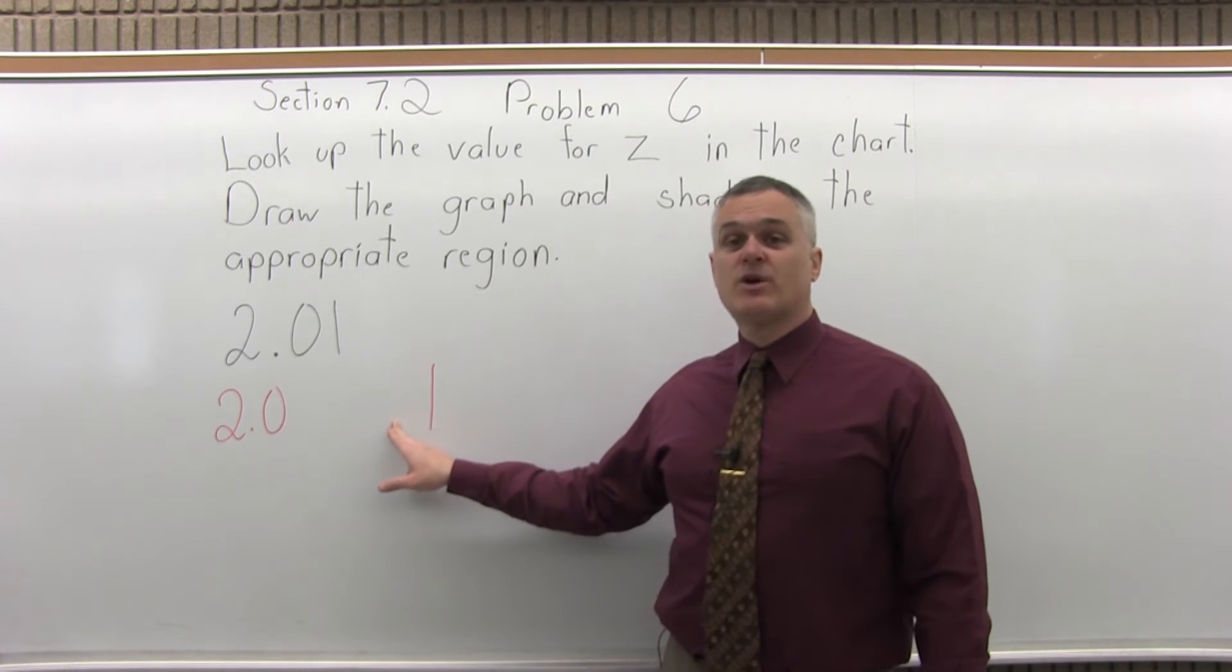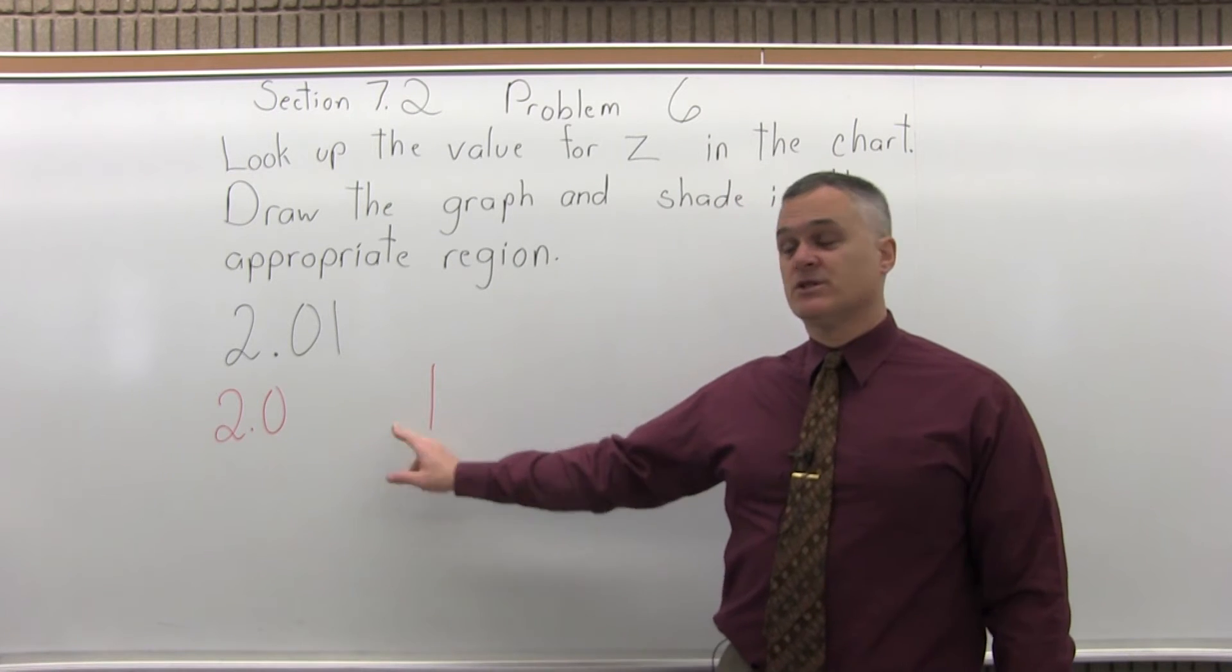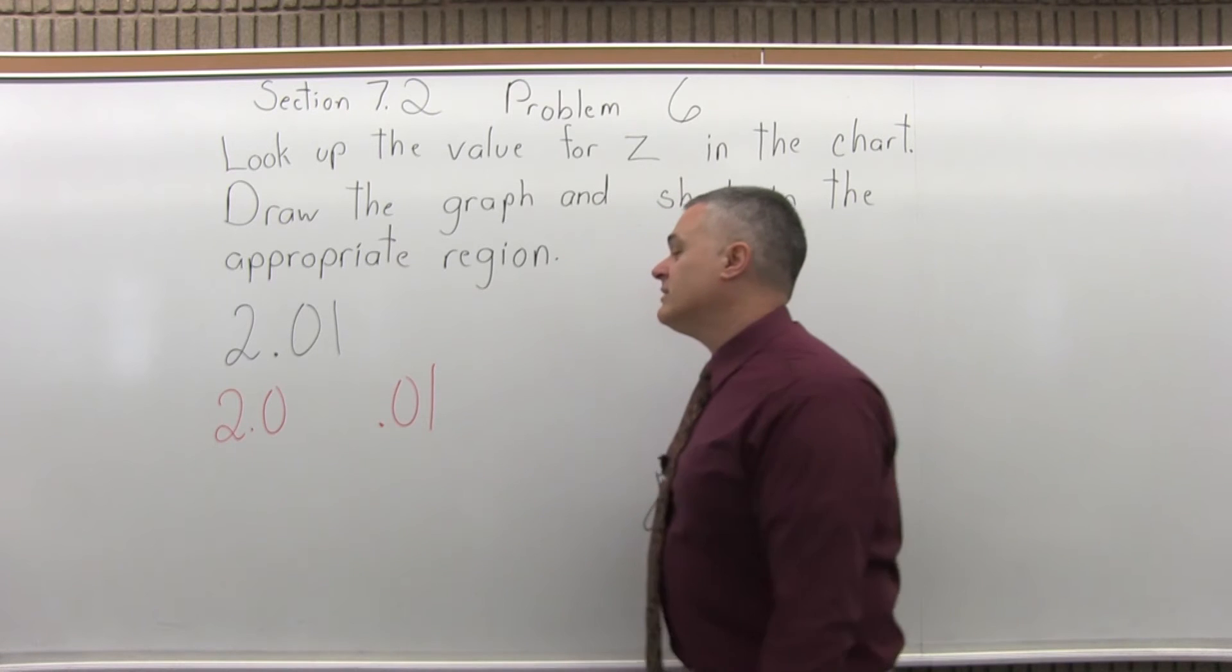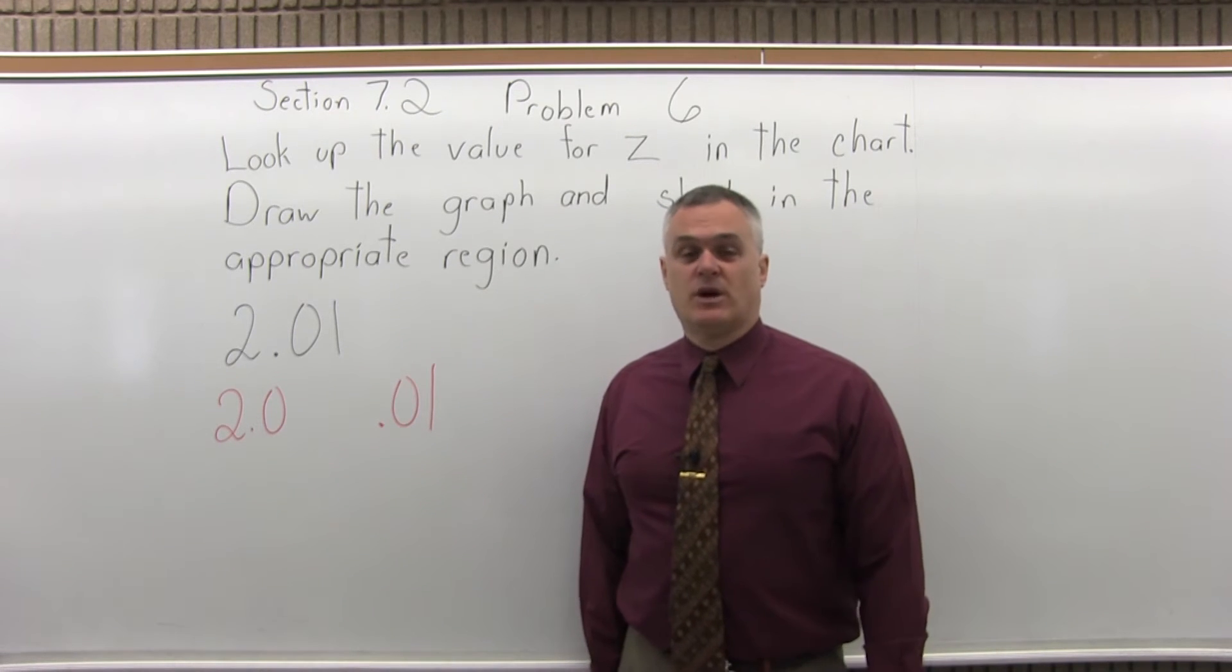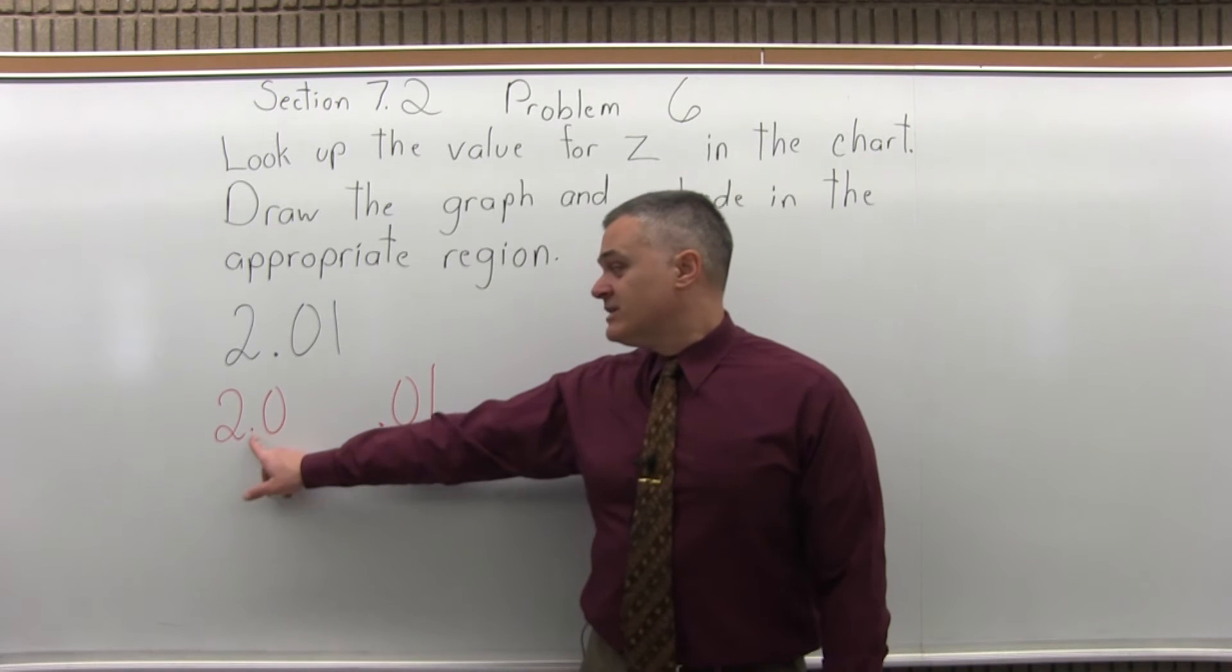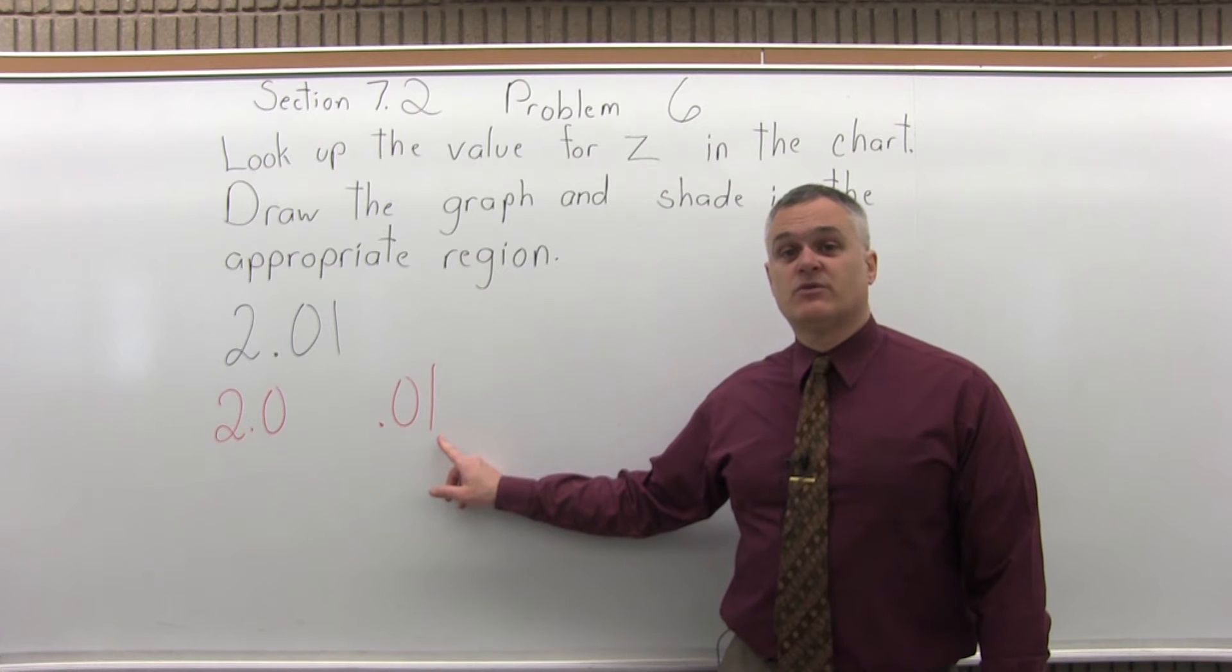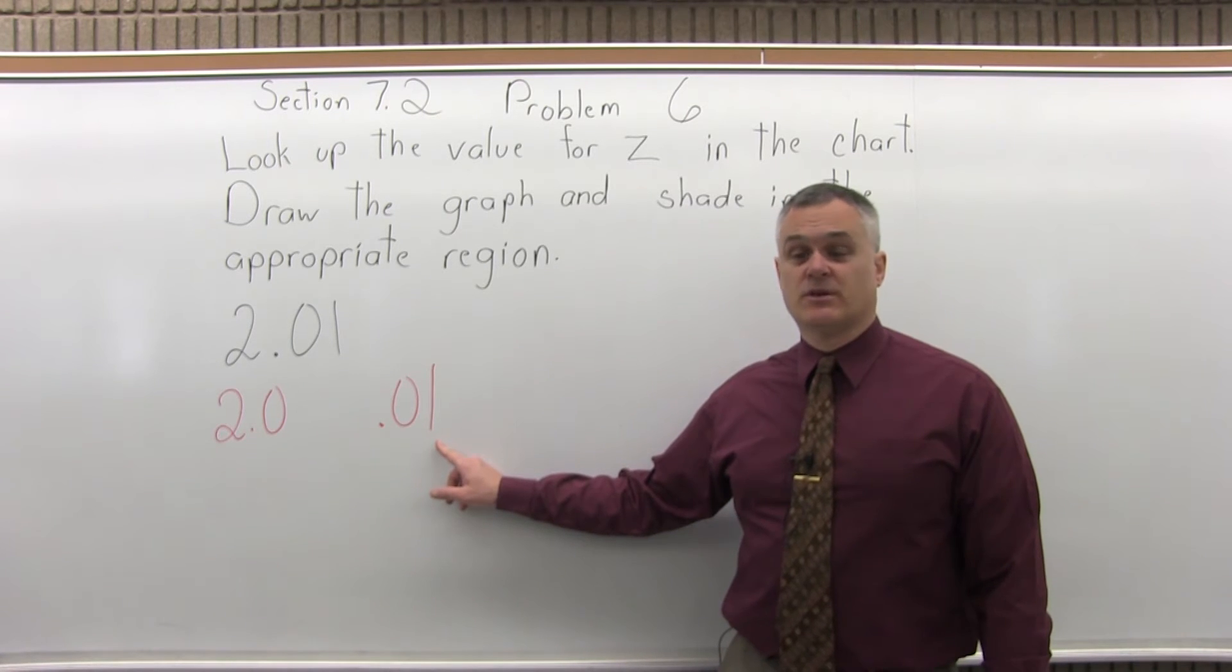Step 3, put a .0 in front of the right most digit that you've pulled off. So the 1 gets written as a .01. Now step 4, go to the chart and the digits from the left will tell you what row of the chart to look in and the digit from the right with the .0 in front will tell you what column of the chart to look in.